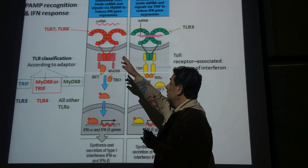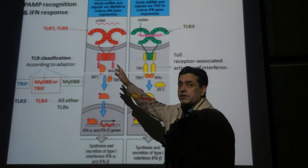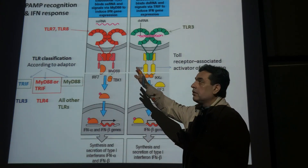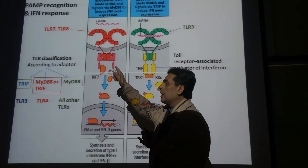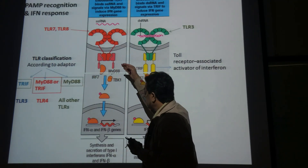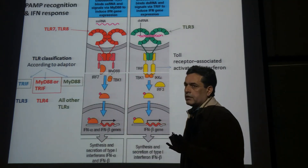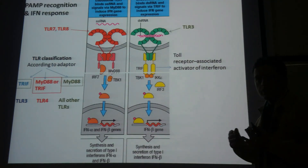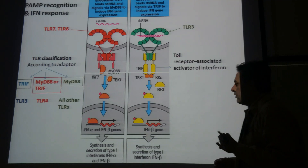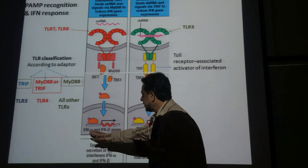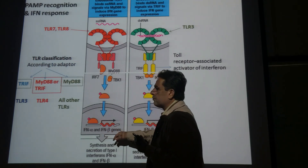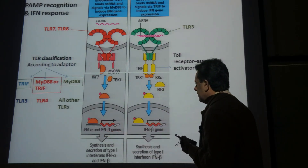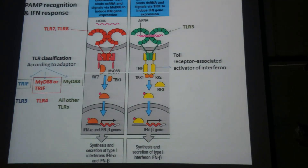Who is doing this? Single-stranded RNA. TLR7 and TLR8 are going to lead to this cascade of events, ultimately leading to the production of interferon alpha and interferon beta. These are type 1 interferons.